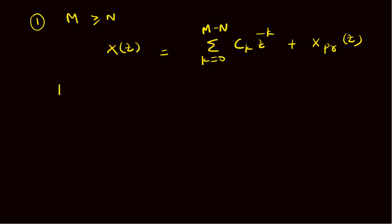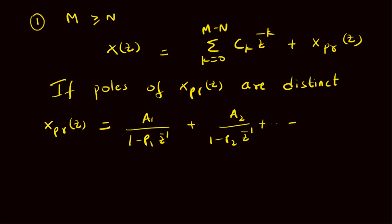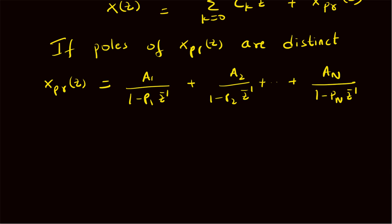Now assume that the proper fraction component X_pr(z) has N distinct poles. Then we can write X_pr(z) as a partial fraction expansion: A_1 divided by (1 minus p_1 z-inverse), plus A_2 divided by (1 minus p_2 z-inverse), and so on up to A_N divided by (1 minus p_N z-inverse). That is the general structure of X_pr(z).